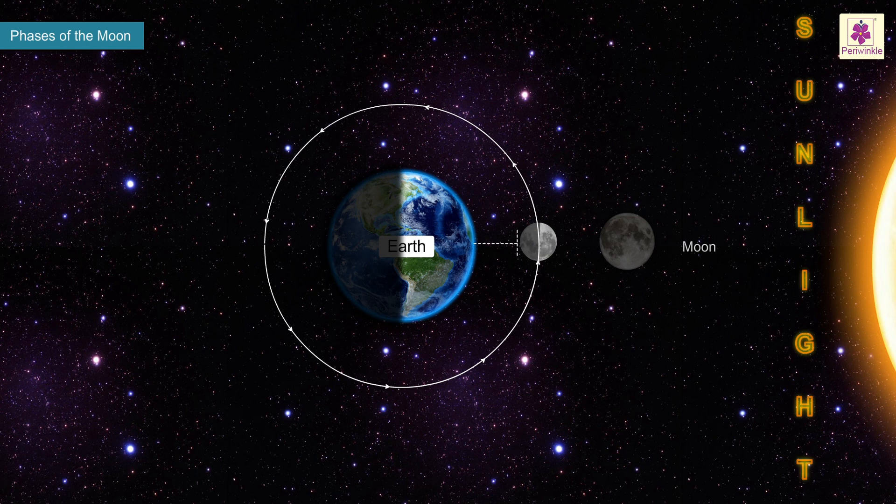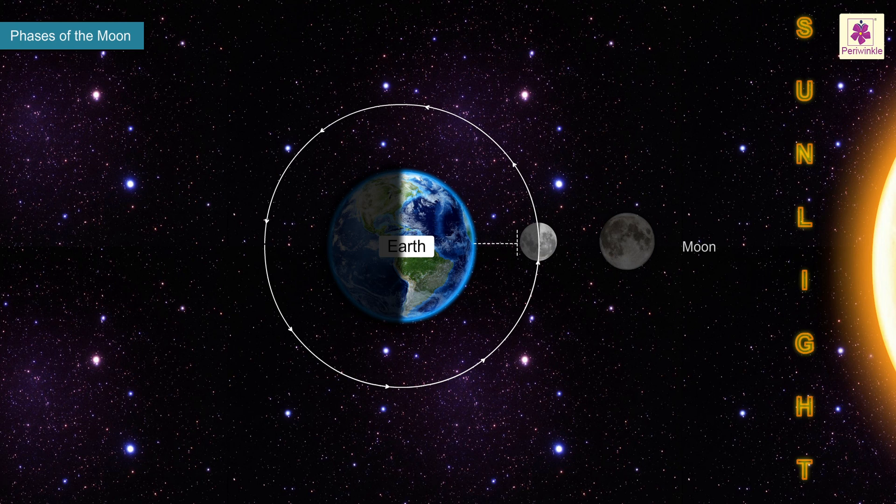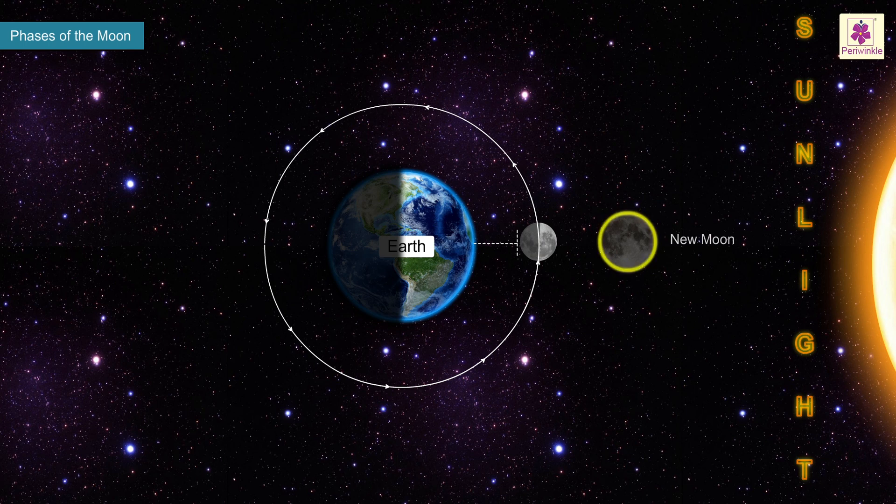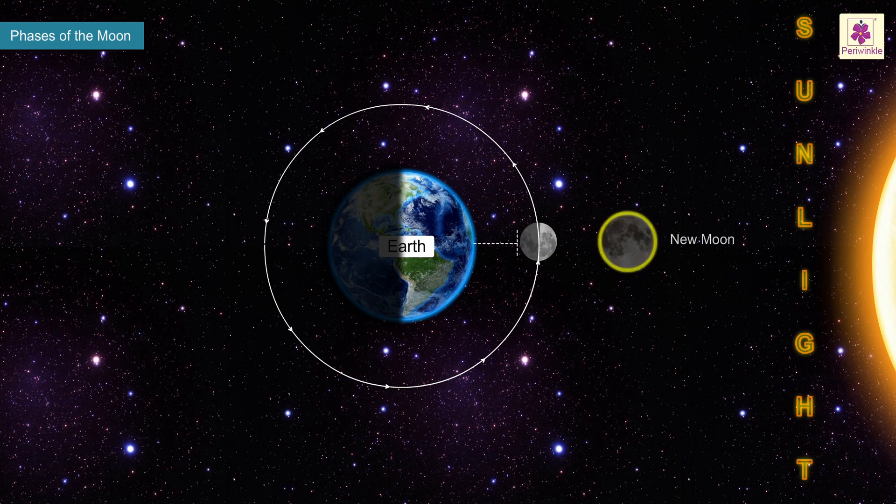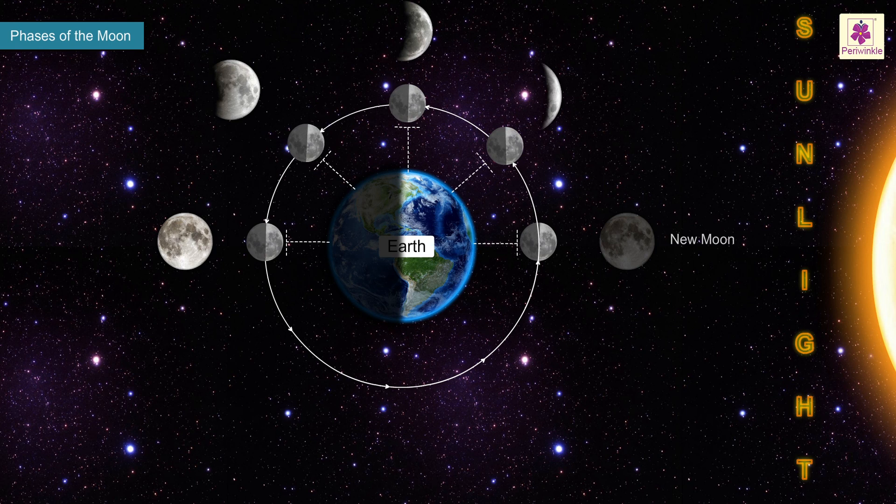In the new moon phase, the side of the moon visible from Earth is not illuminated by the Sun. As the moon waxes, that is, the amount of illuminated surface as seen from Earth increases.